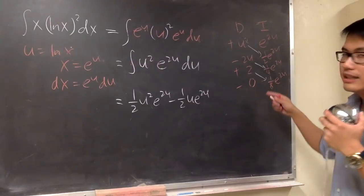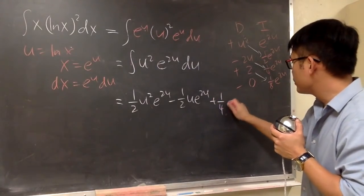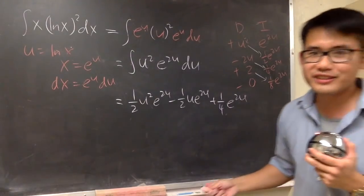And then this times that is 1 over 4. So plus 1 over 4 e to the 2u. Oh my God, this is so nice, right?